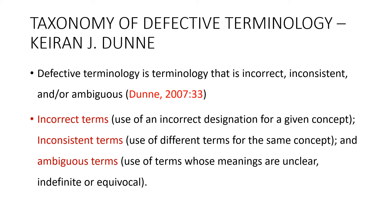This study used Karen Dan's taxonomy of defective terminology. According to Dan, defective terminology is terminology that is incorrect, inconsistent, and ambiguous. He has isolated those three parameters, which were used in this study to analyze COVID-19 terminologies in Chichewa. Incorrect terms refer to the use of an incorrect designation for a given concept. Inconsistent terms involve the use of different terms for the same concept, which may create confusion. Ambiguous terms are those whose meanings are unclear, indefinite, or equivocal.